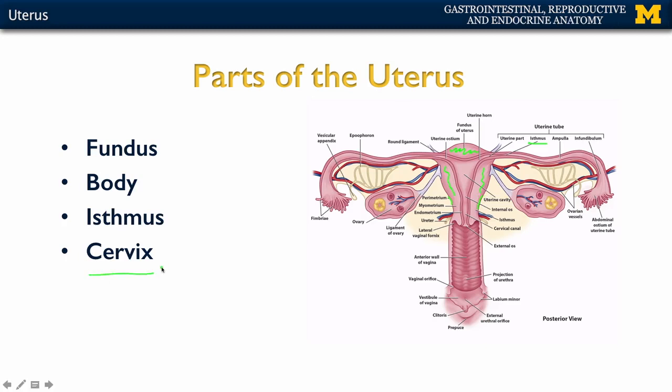The cervix is going to be the most inferior portion of the uterus. This is one of the more immovable portions — there is some movement, but for the most part it's immovable. It's very fibrous in comparison to the rest of the uterus, which is mostly muscular. That's why you can palpate the cervix in a digital exam, but you're not necessarily able to do so with the more muscular portions of the rest of the uterus.